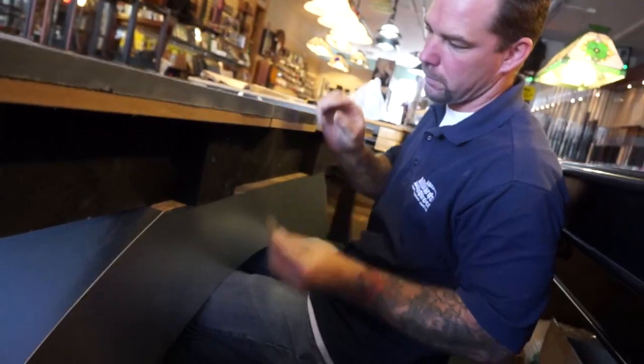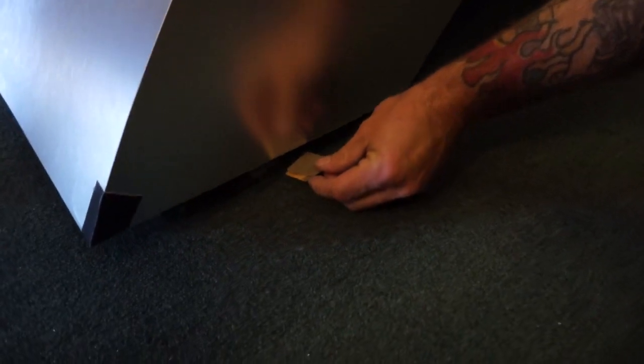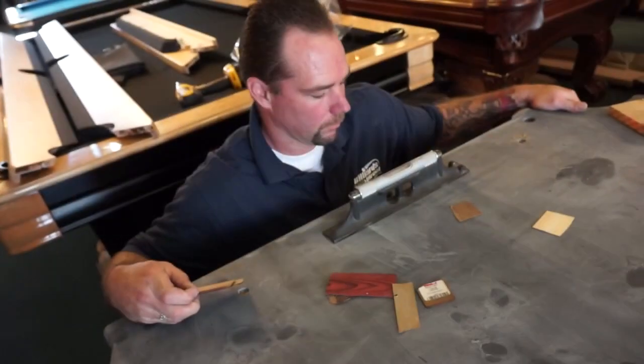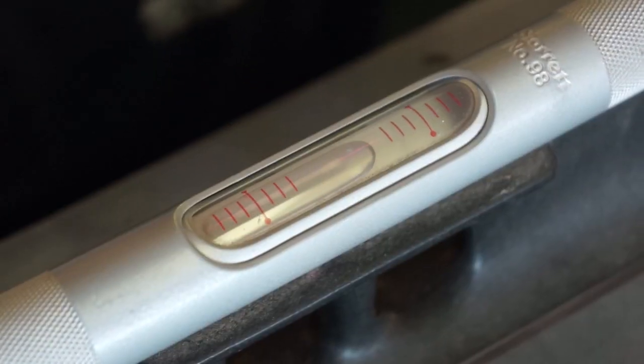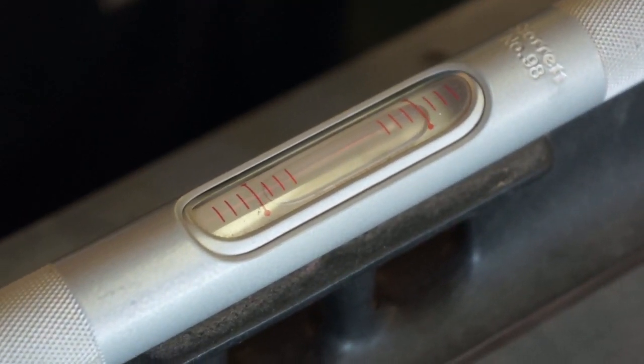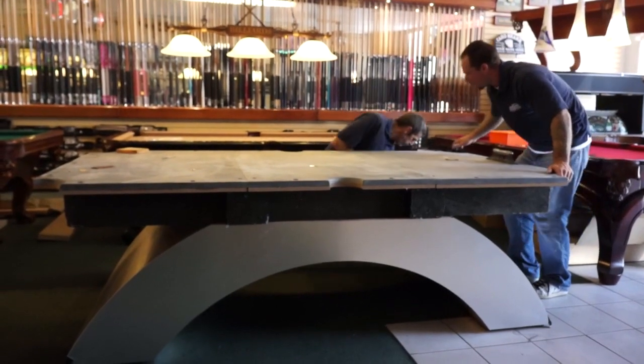Returning to the slate, we see that our installers are now using more shims to level the slate more accurately. Using a special machinist level, the installer checks the slate and shims it until the machinist level is completely centered. This level is accurate enough to register a change of less than one five hundredths of an inch.